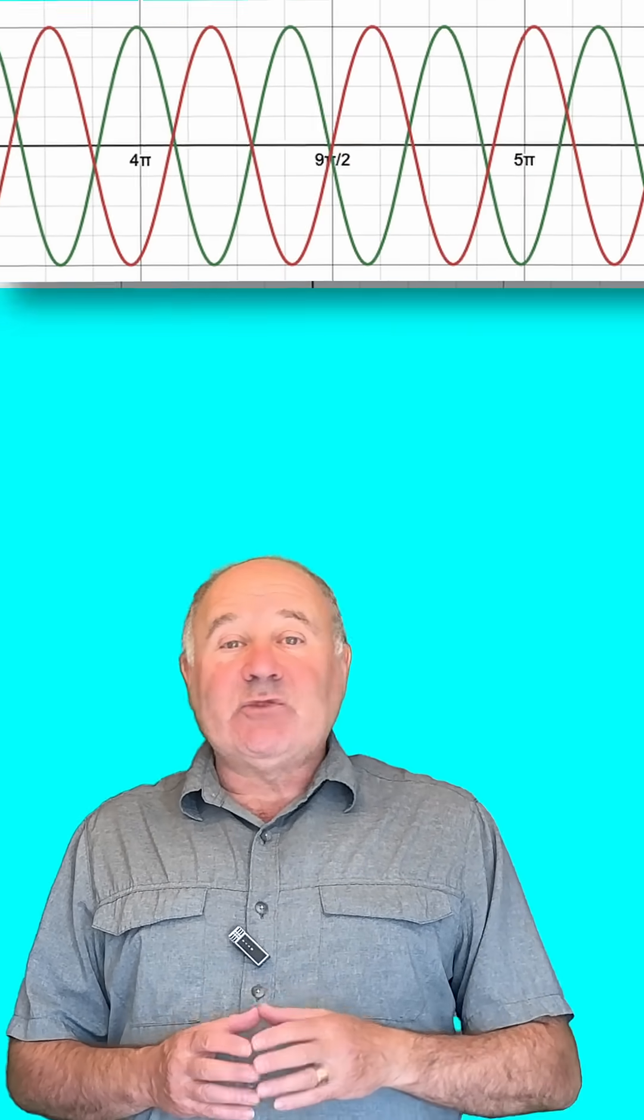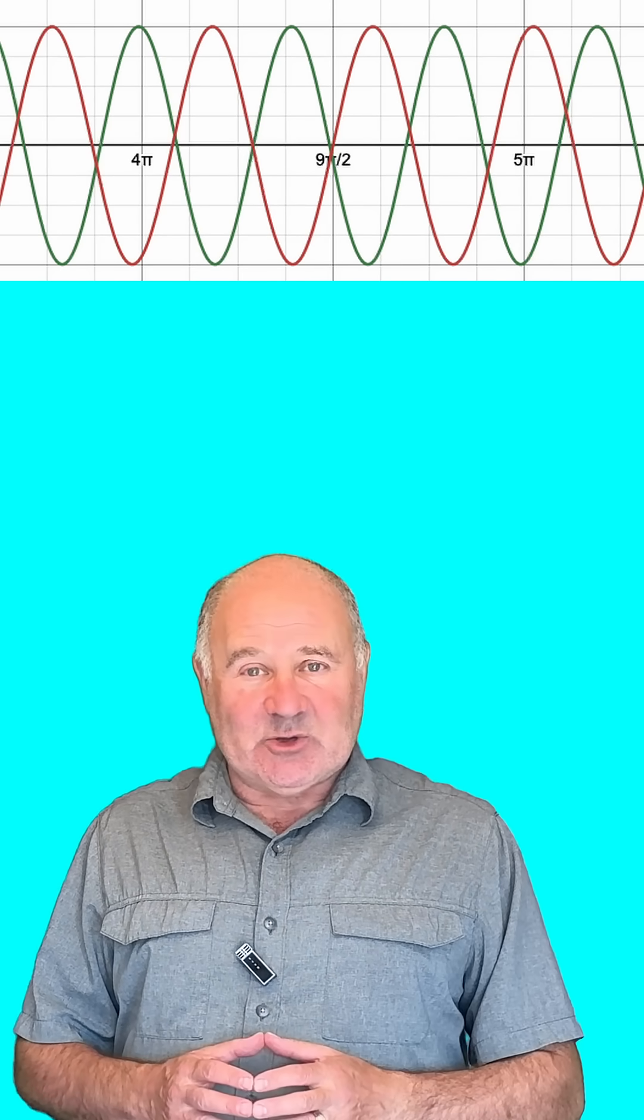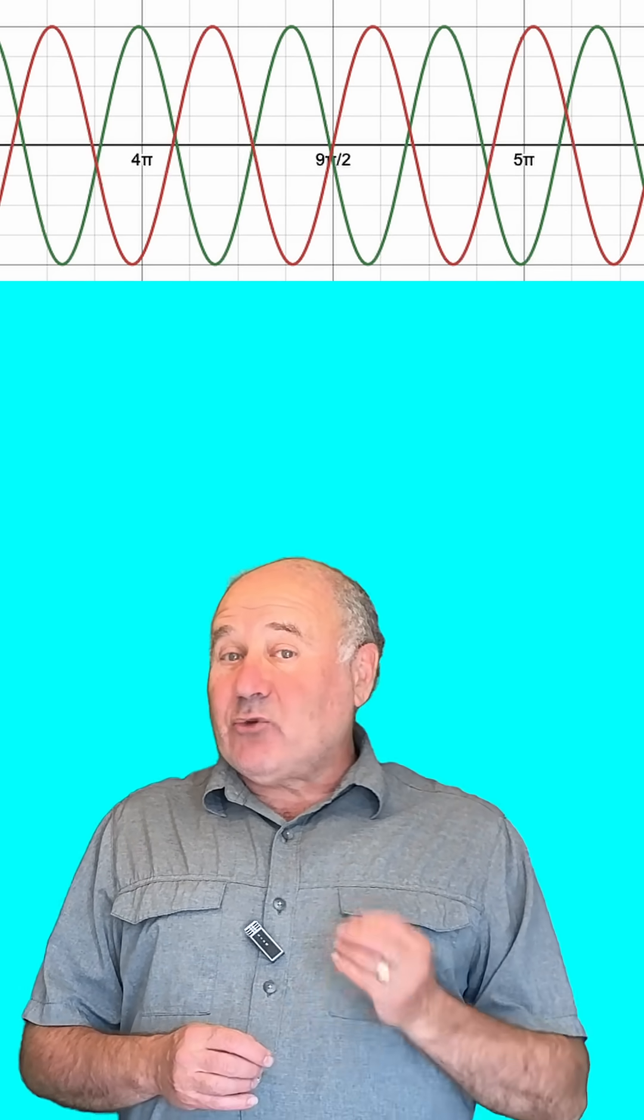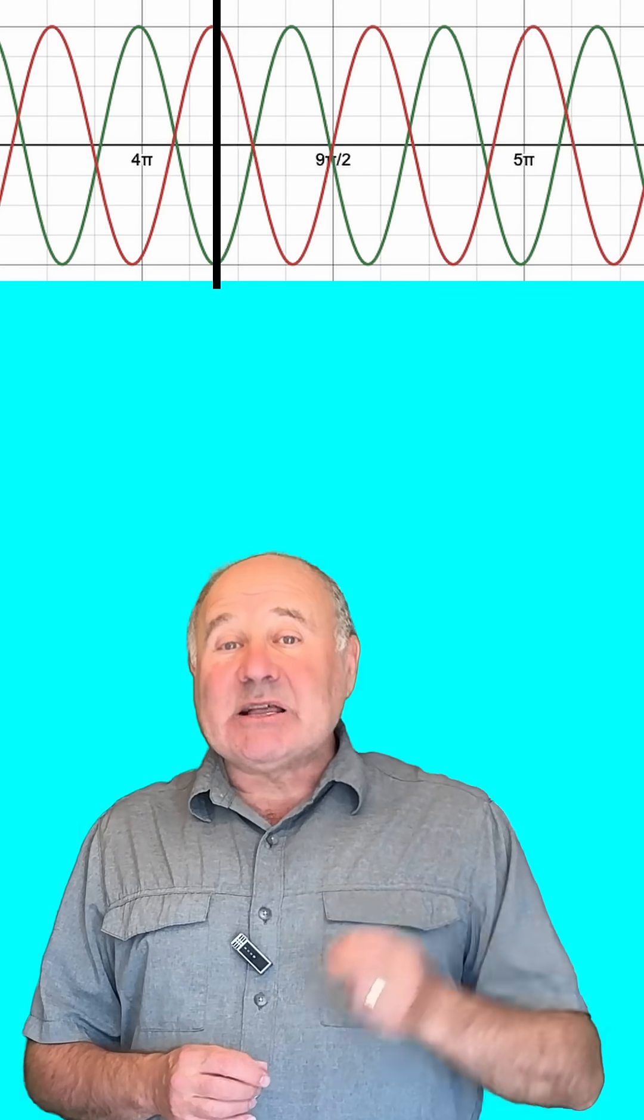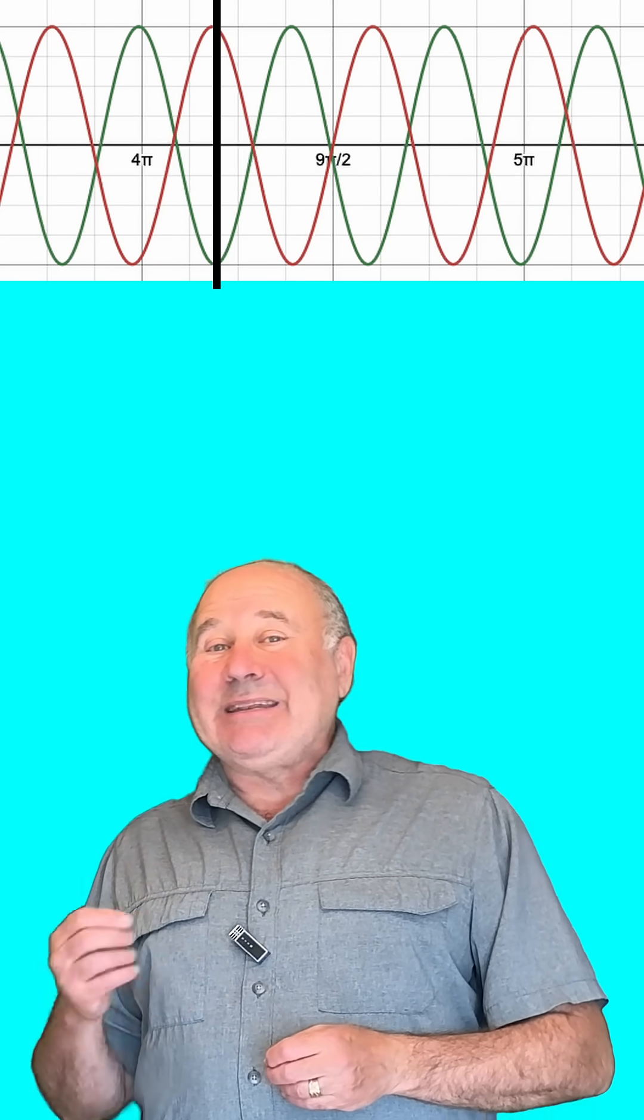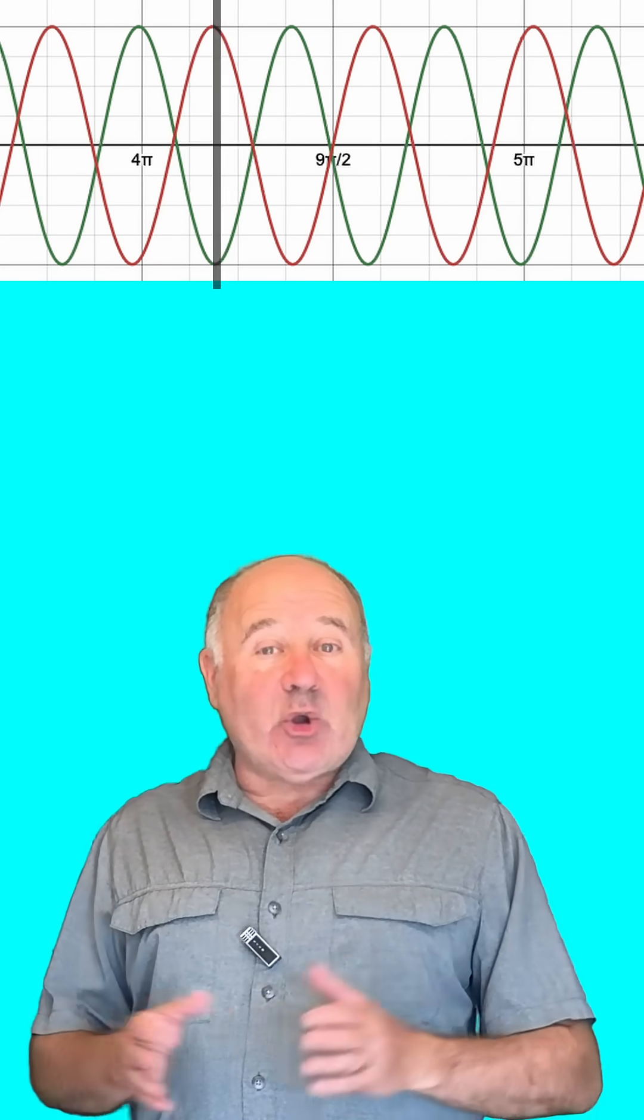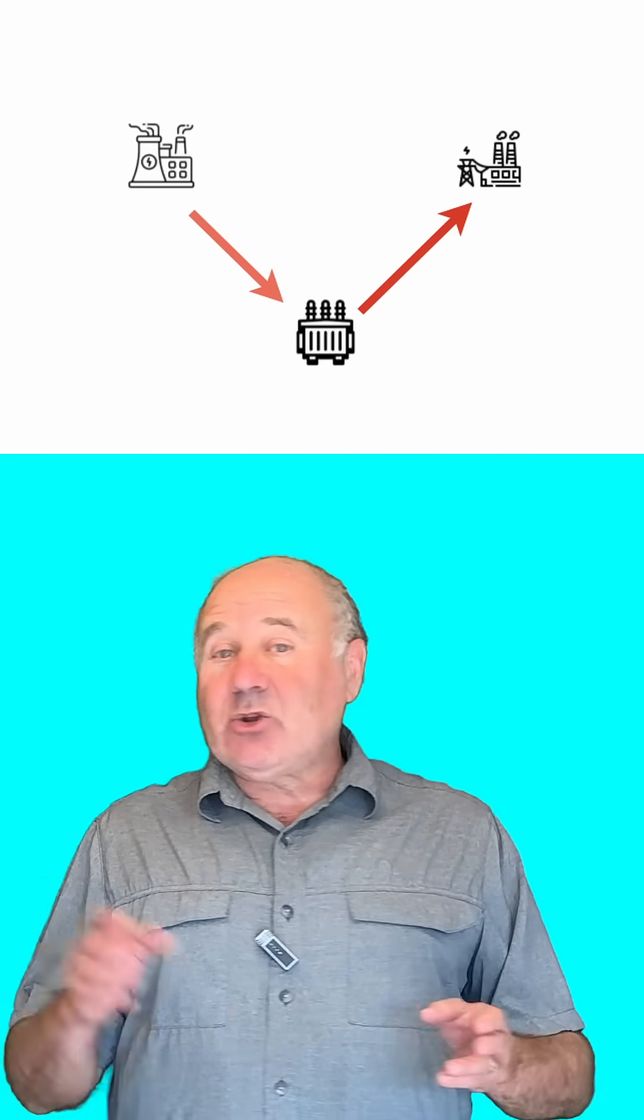But after five seconds, one generator would have done 250 cycles, and the other 250.5 cycles. So now the voltage at the first generator is at its peak positive voltage, and the other generator is at its peak negative voltage, and a strong current is going to flow from one generator to the other.